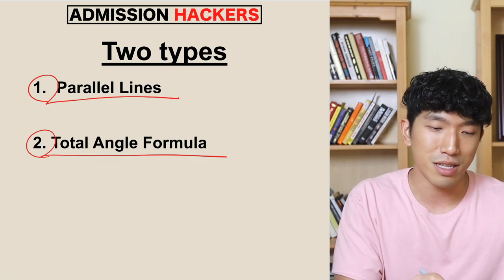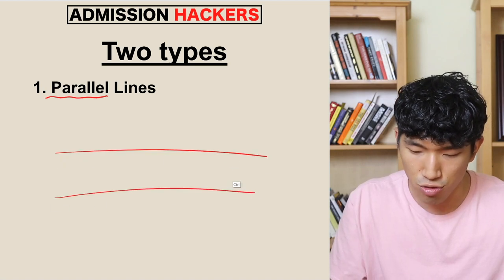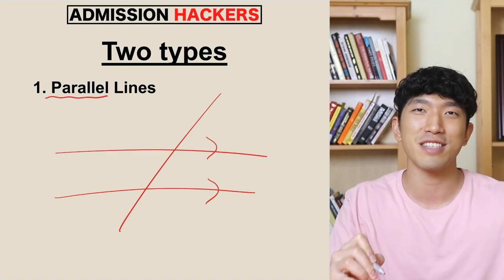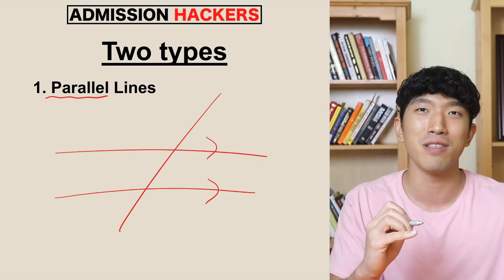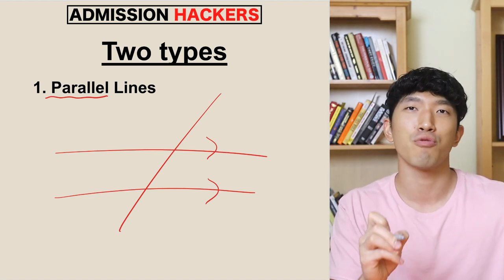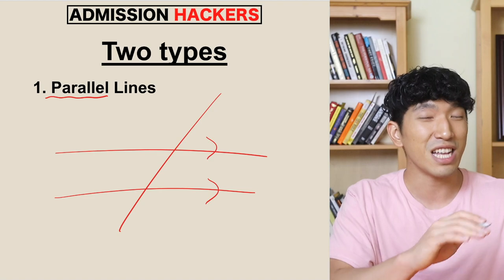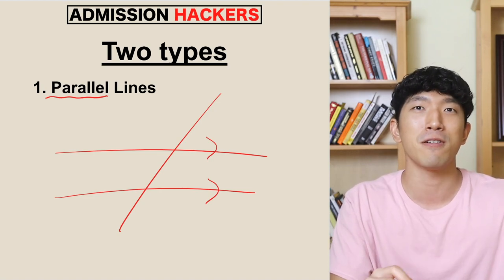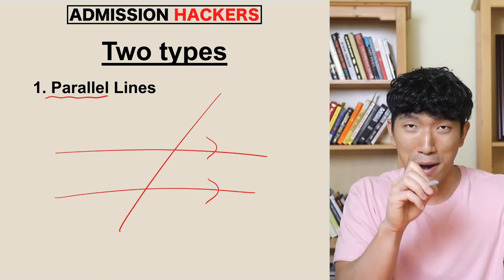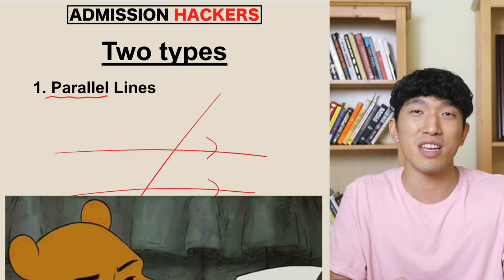So we're going to start off with parallel lines. Parallel lines are two lines that are going to be parallel. Whenever you see two lines that are parallel, there is a 200% chance it's going to be a parallel line question. One thing to keep in mind is the question will always tell you that we are dealing with two parallel lines. If the drawing kind of looks like parallel lines but the question doesn't tell you that they are parallel, do not use these techniques — it's not going to be about parallel lines. The SAT literally puts these parallel lines just to trick you into thinking about parallel lines when in reality you shouldn't be. Don't fall for the trick.